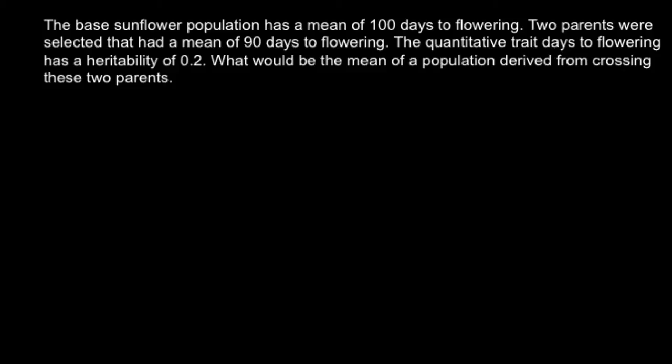And here is a problem. The base sunflower population has a mean of 100 days to flowering. Two parents were selected that had a mean of 90 days to flowering. The quantitative trait 'days to flowering' has a heritability of 0.2. What would be the mean of the population derived from crossing these two parents?